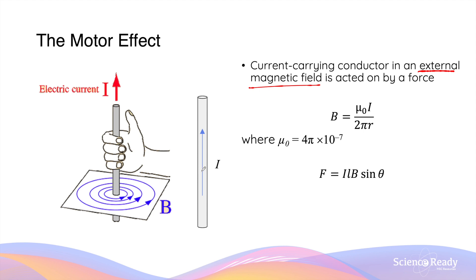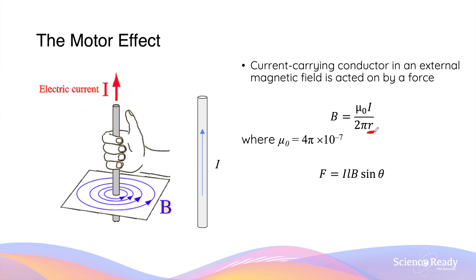This phenomenon is known as the motor effect. The strength of the magnetic field produced by the first conductor is given by the equation B = μ₀I / 2πr, where μ₀ is the magnetic permeability constant, I is the current flowing through the first conductor, and r is the distance of the second current-carrying conductor away from the first conductor.